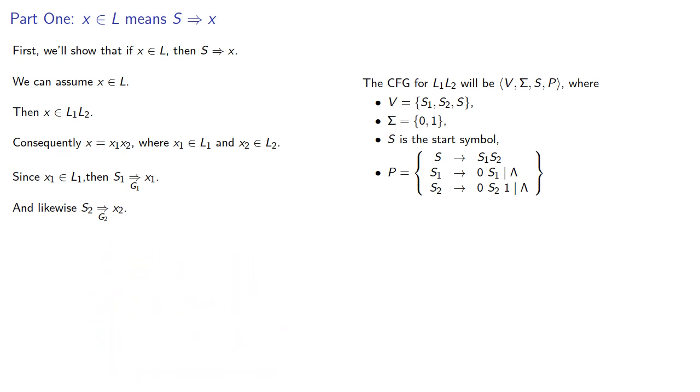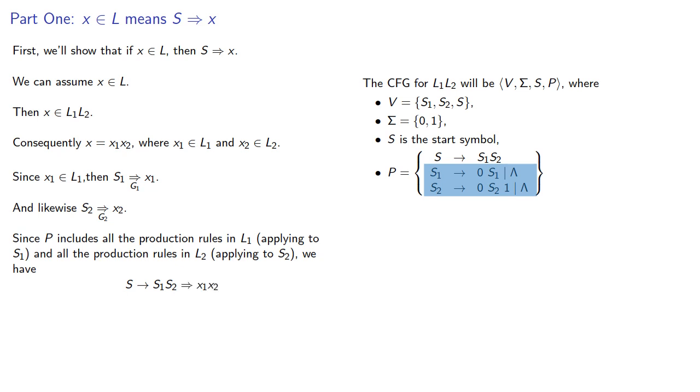And since P includes all the production rules in L1 applied to s1, and all the production rules in L2 apply to s2, we have S produces the concatenation and the individual start symbols can then produce x1 and x2.